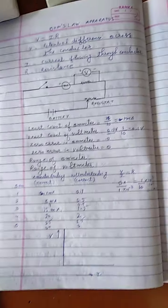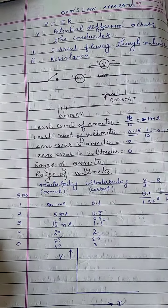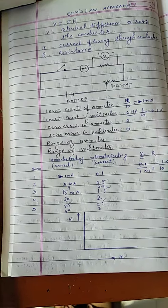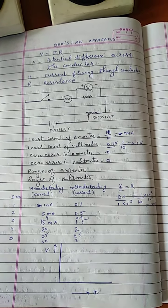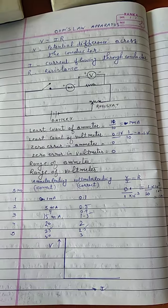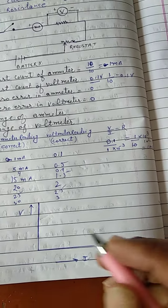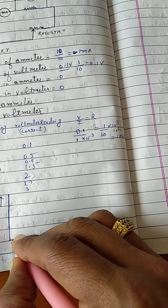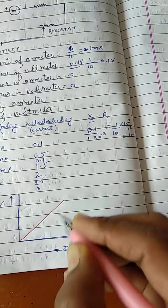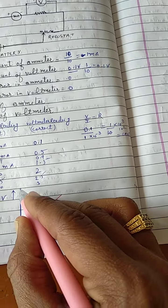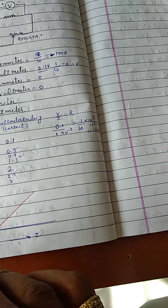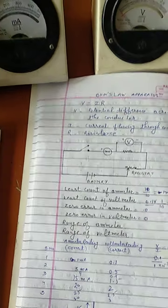So this clearly indicate that as we keep on increasing the potential difference what will happen? Yes, when we increase the potential difference the current flowing through the conductor will also increase. And we will see a graph like this. This is a linear graph. When we keep on increasing the potential difference the current flowing through the wire will also increase.